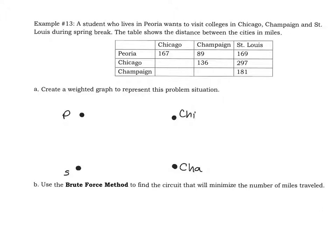So we have a route from Peoria to Chicago that has a weight of 167. Peoria to Champaign has a weight of 89. And Peoria to St. Louis has a weight of 169.